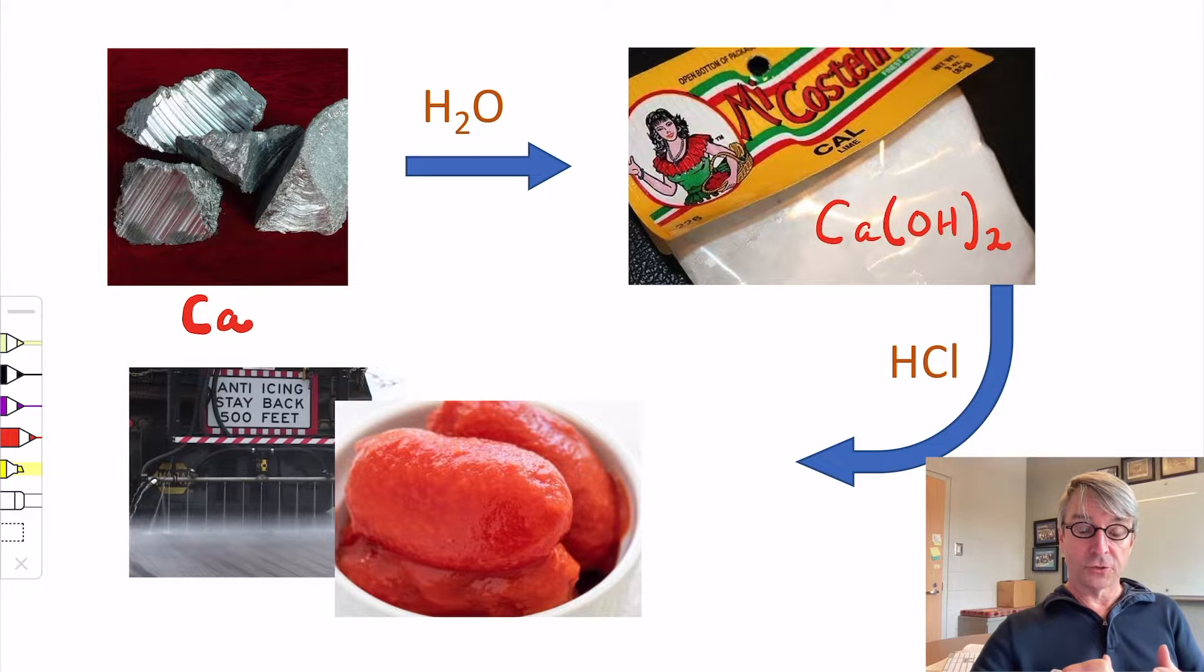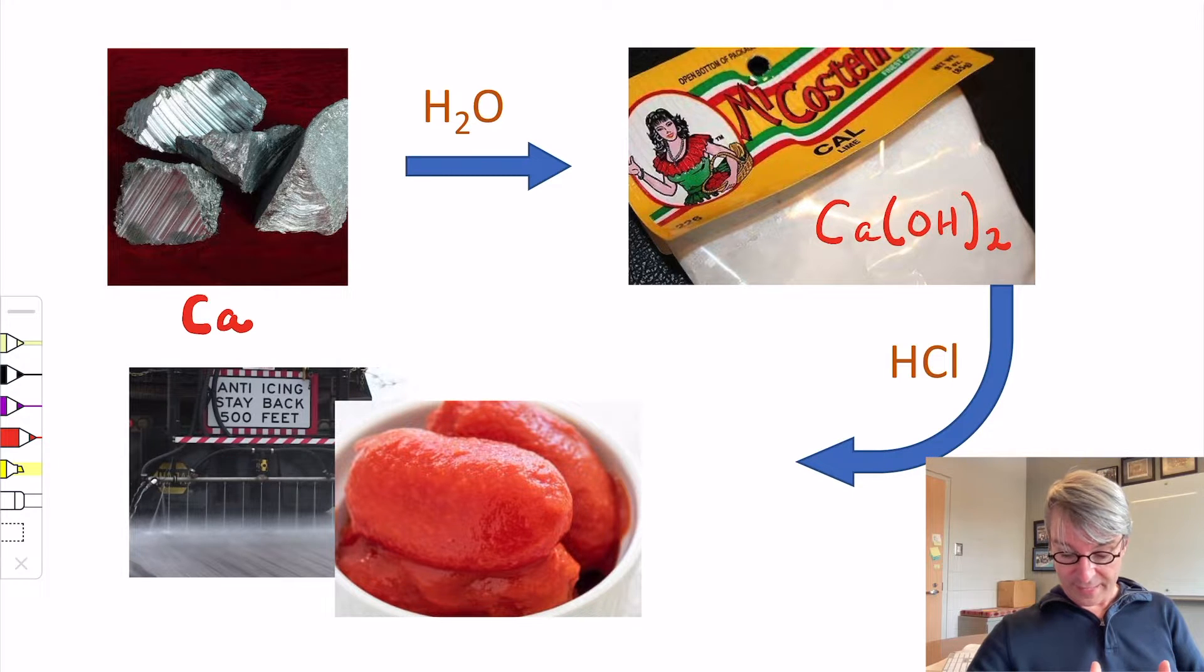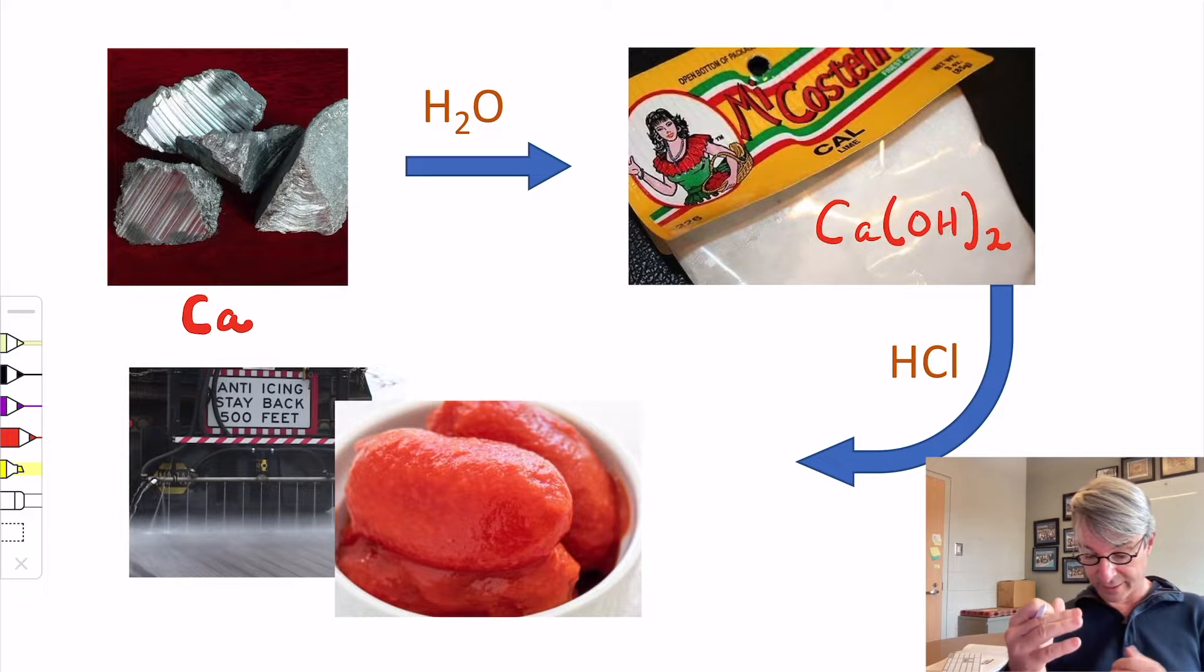This also makes the niacin in the corn more available to the human body. Also, corn and grains that are stored tend to grow mold that produces aflatoxin, which is a dangerous poison to humans. Cooking the corn in the calcium hydroxide removes those toxins, destroys those toxins. This is an ancient process of the native peoples of the America.